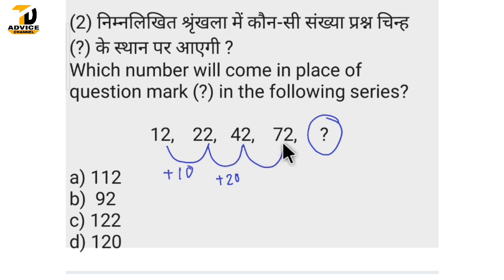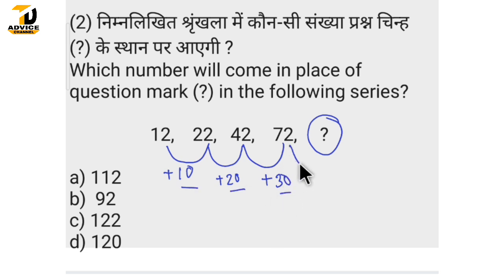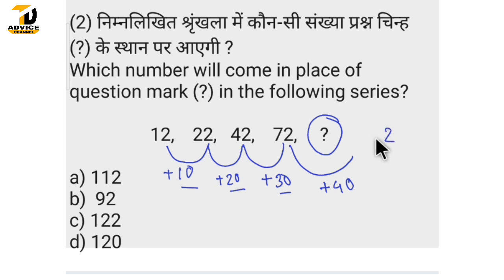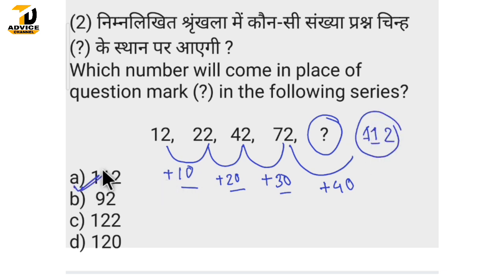The difference between 42 and 72 is 30. So the differences are 10, 20, 30 — the next difference is 40. From 72 plus 40 we get the answer. The right answer is Option A.